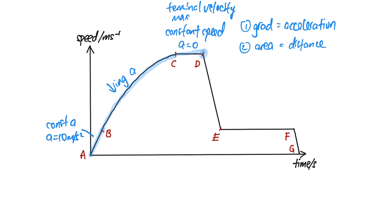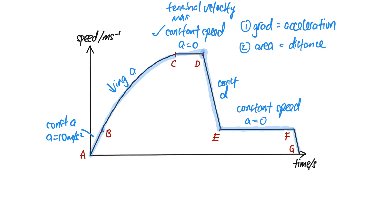At point D, the parachutist activates his parachute and it is fully open, causing constant deceleration. As speed decreases from D to E, from E to F, once again the acceleration is zero and the skydiver is moving down at constant speed, but at a much lower speed now as he glides down. From F to G, he touches the ground and comes to a complete rest — constant deceleration.